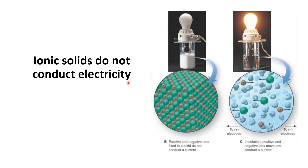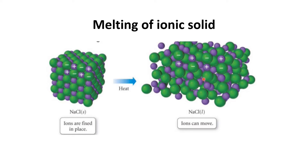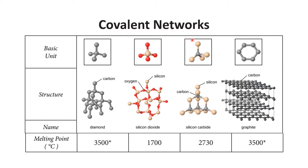The fourth property of ionic solids is that they do not conduct electricity. A material can conduct electricity only when there is movement of charge. In ionic solids the ions are tightly packed, so charges cannot move and they do not conduct electricity. However, when the ionic solid is dissolved in water or another solvent, the ions can move and conduct electricity. Another form in which ionic solids can conduct electricity is the molten form — when NaCl is heated and melts, the ions can move freely and conduct electricity.